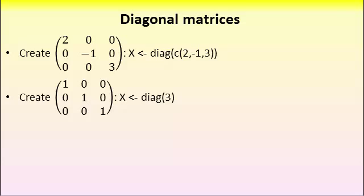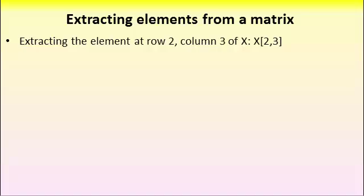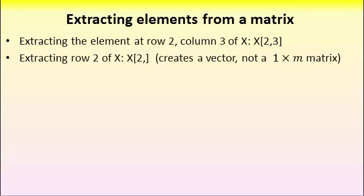Finally let's consider how to extract elements from a matrix. This is very similar to how you extract elements from a vector. So let's say that you want the number which is at row 2 column 3 of a matrix X. Well you use the square parenthesis as before. But you need now two numbers. The row number followed by the column number. If you want to extract an entire row of a matrix, you use the notation X 2 comma and nothing following the comma.